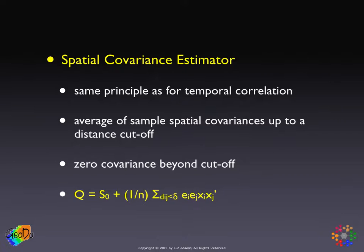We will impose some structure to avoid the incidental parameter problem, and force a zero covariance beyond a particular distance cutoff. In general, we can write this just as before, where we have an average of all the sample cross-products that pertain to locations i and j that are within a given distance band from each other.